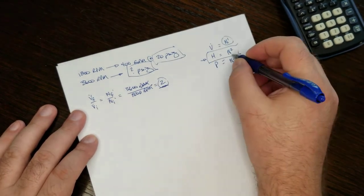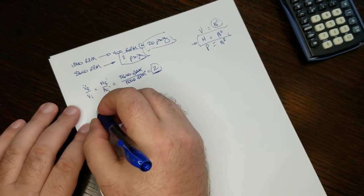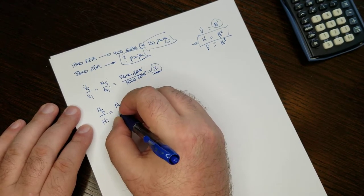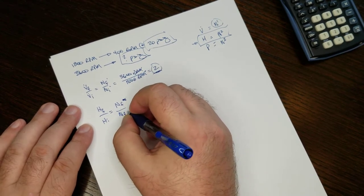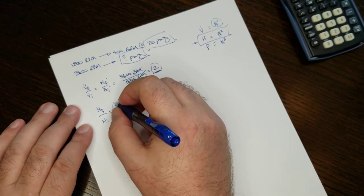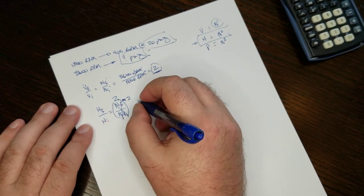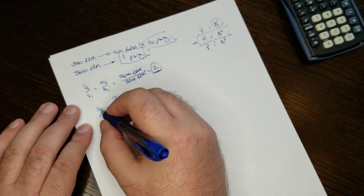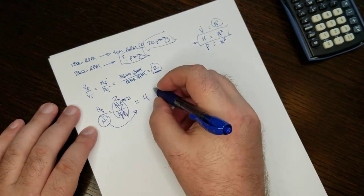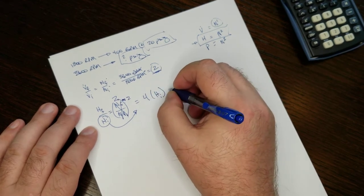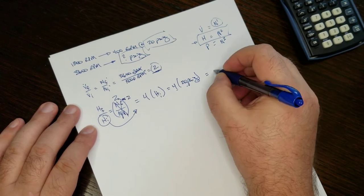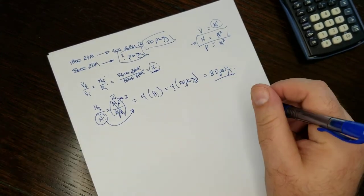And we know that our factor 2 squared... let me not jump ahead. So head final over head initial is equal to speed final over speed initial, and then the whole thing is squared. And we've already done this work here. We know that's 2. And 2 squared is 4. So head final over head initial equals 4. Well, we know this value. So let's move that over here. Multiply times head initial, which is 4 times 20 PSIG, 4 times 20, 80 PSIG. And that's problem one.